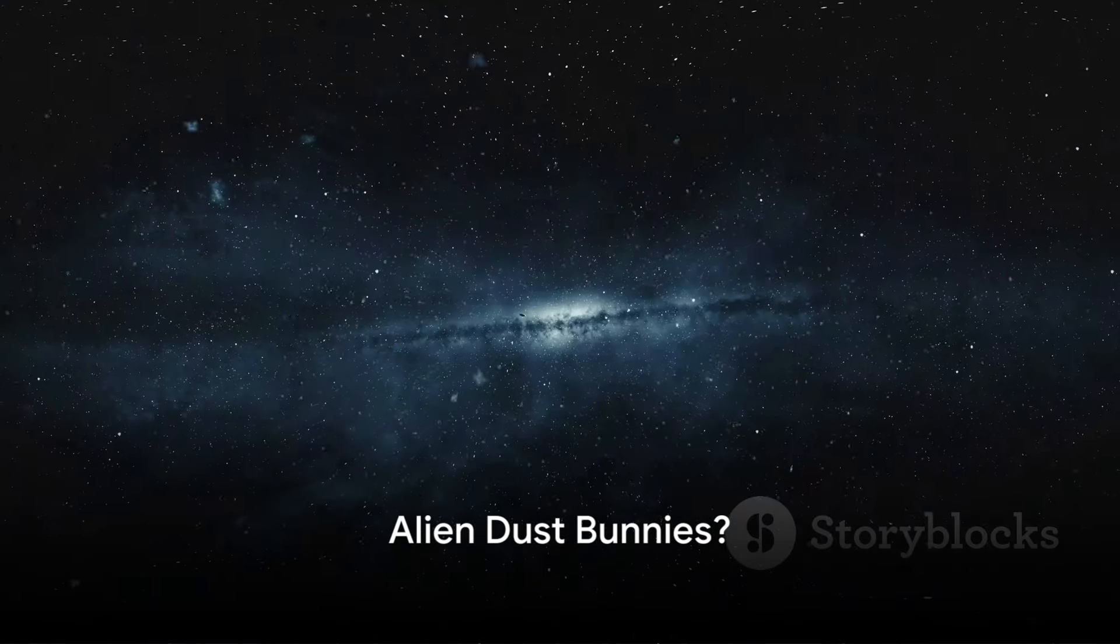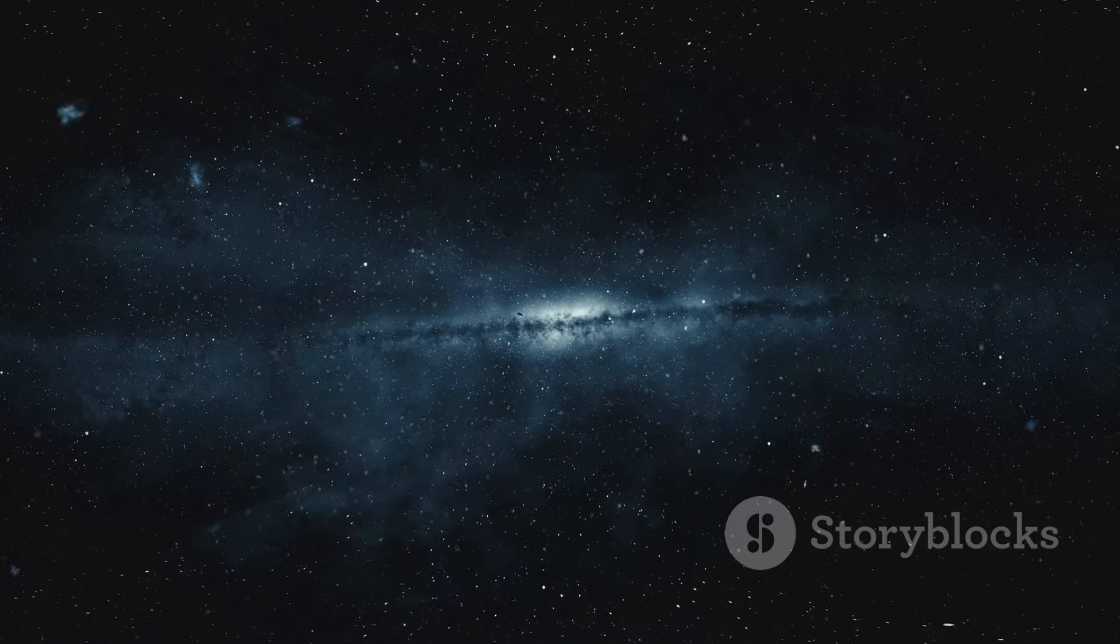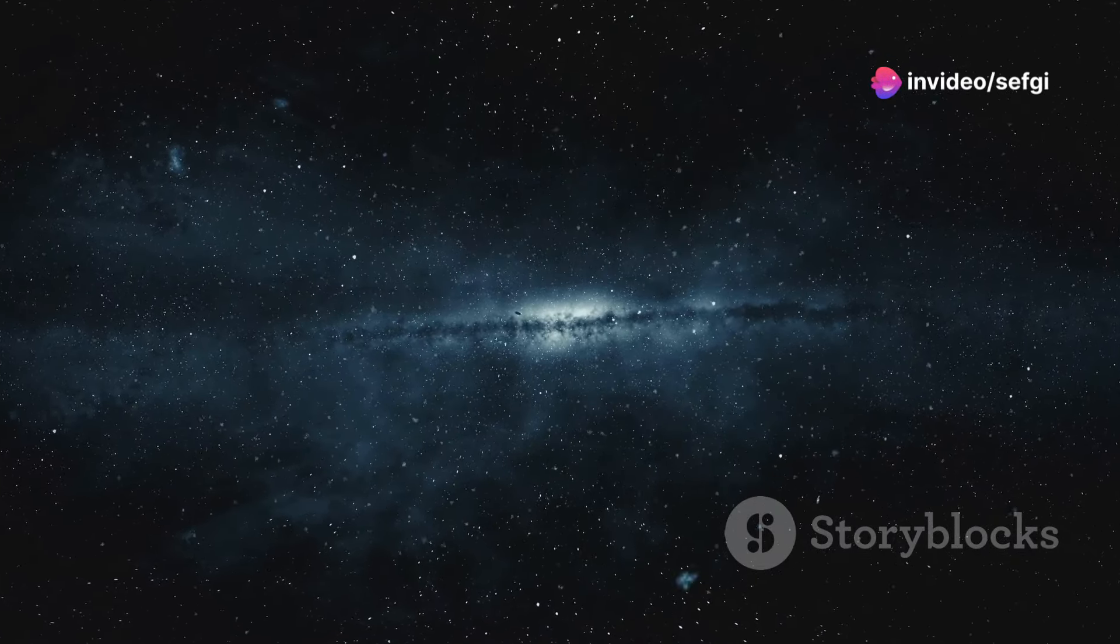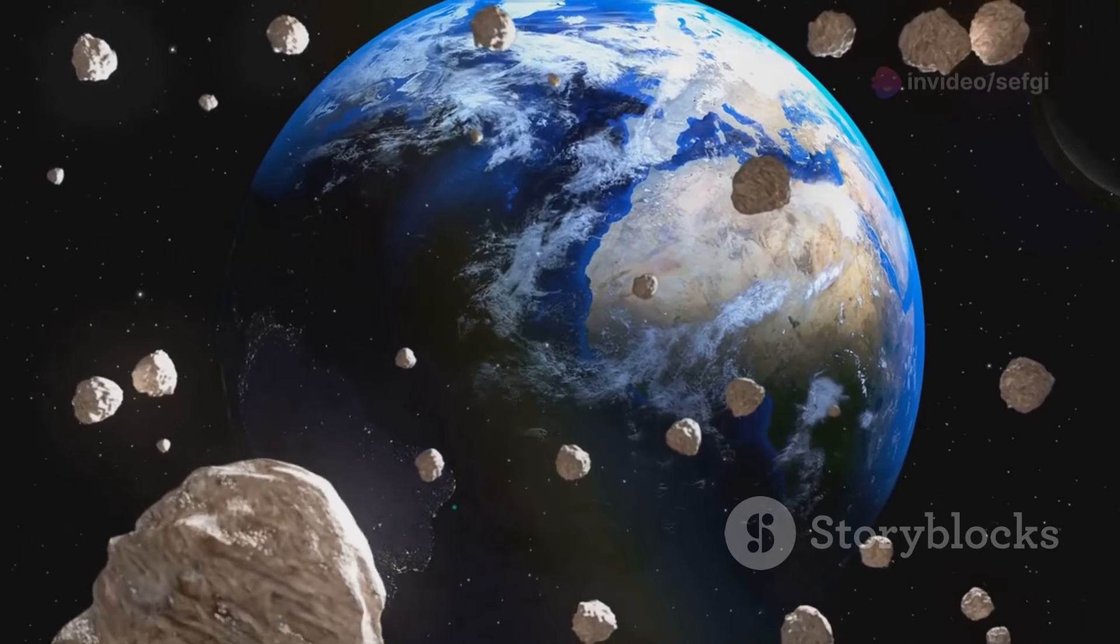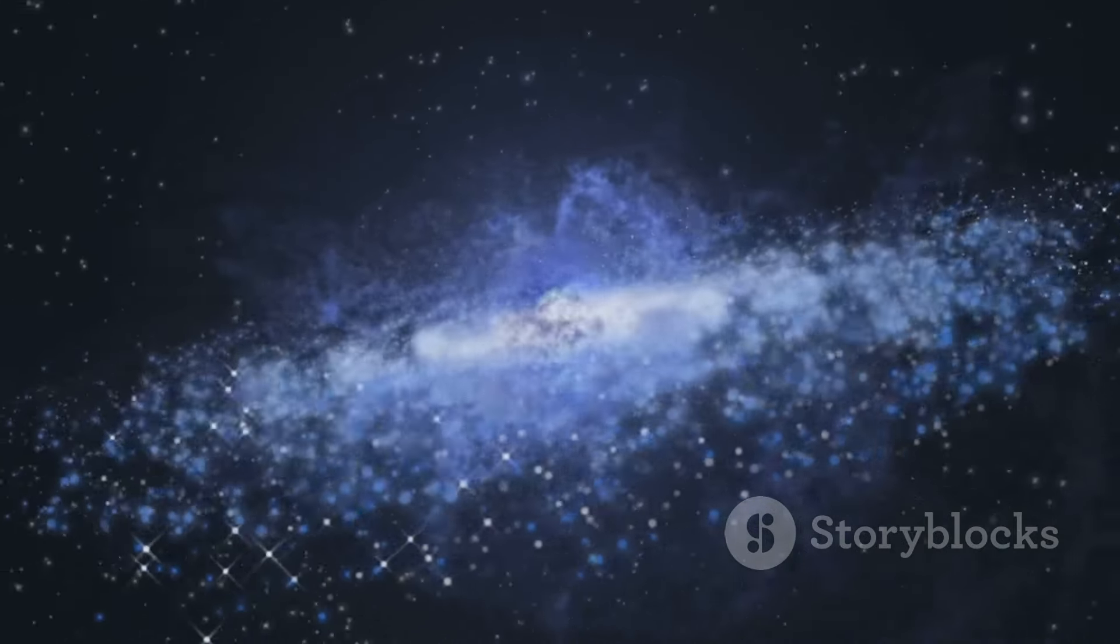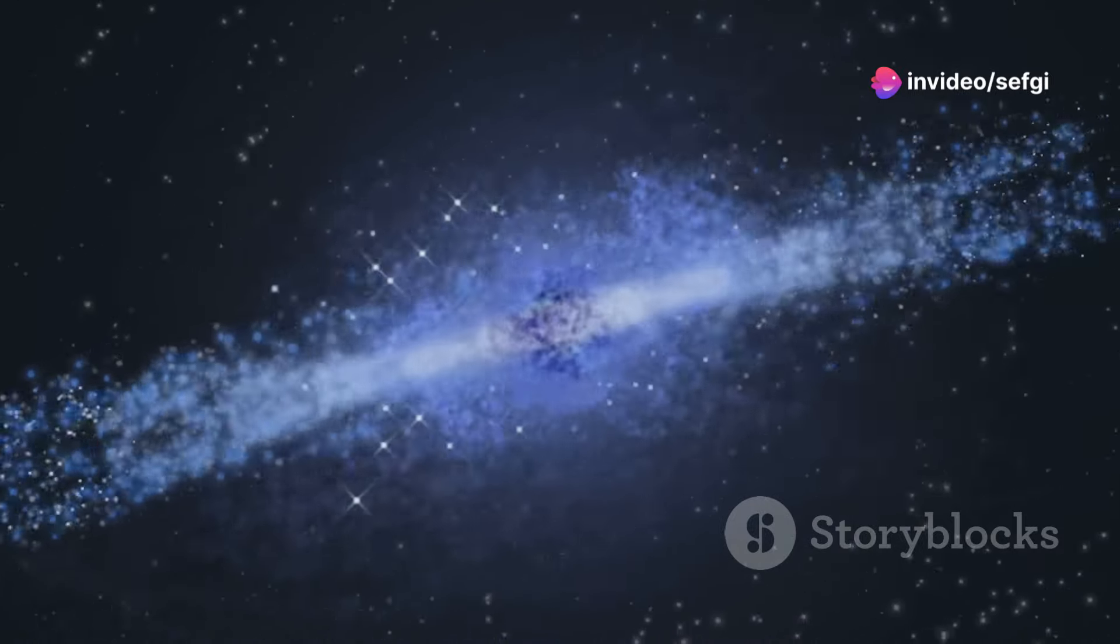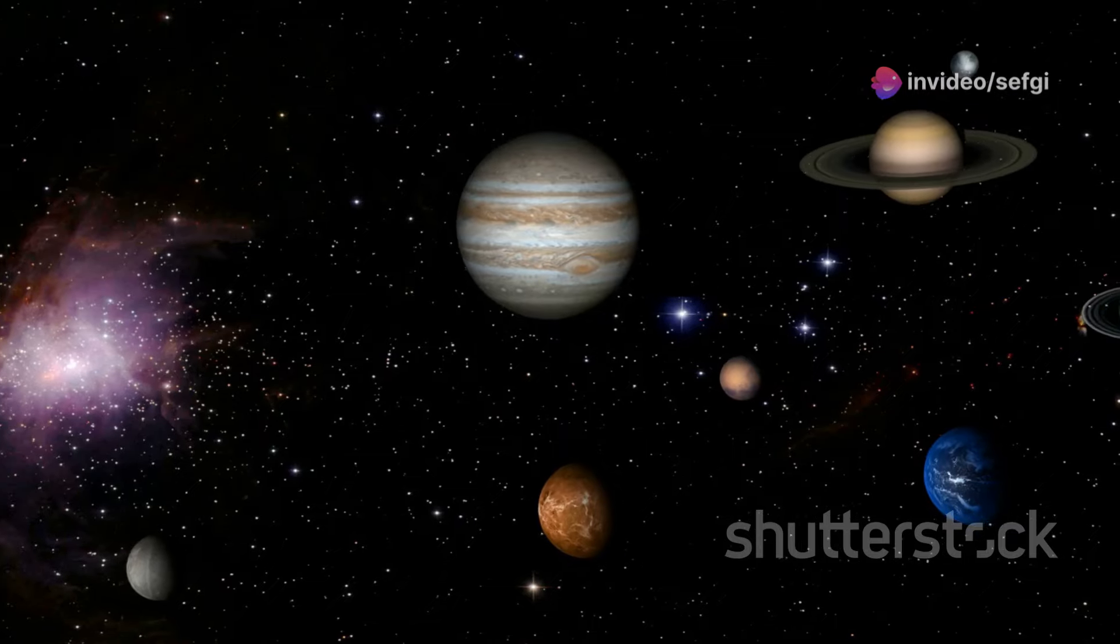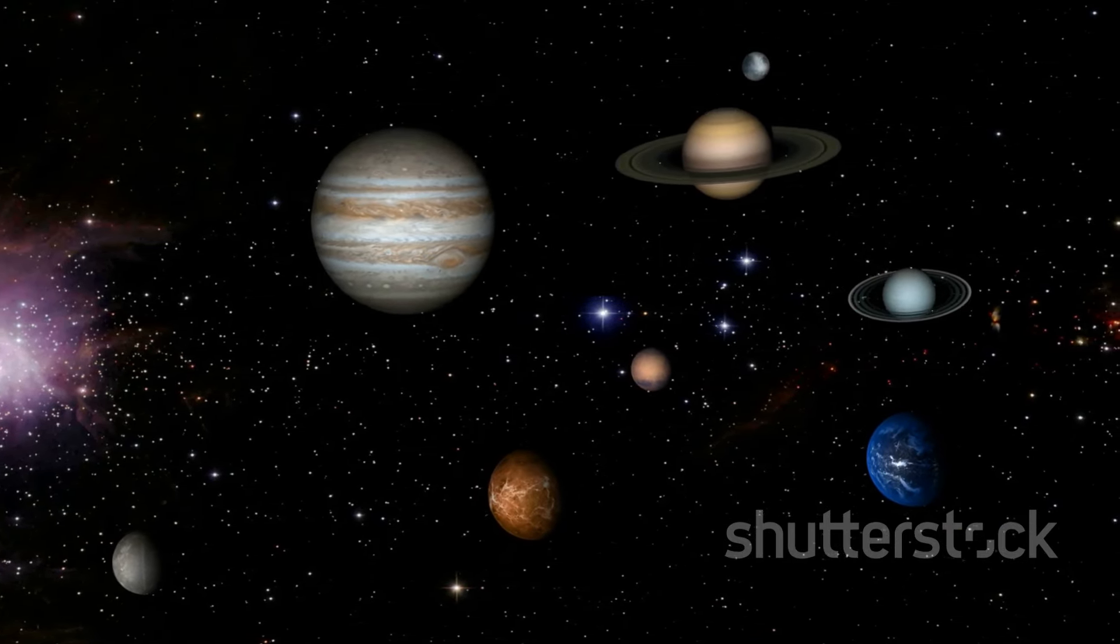Dust, it's everywhere, even raining down from space. Yes, you heard right. Among the countless particles that float around us, some have traveled light years across the cosmos to end up in your home. This isn't your everyday household dust though. It's cosmic dust, tiny fragments from comets and asteroids. These microscopic travelers are more than just interstellar dust bunnies. They carry within them the secrets of our universe. By studying these particles, scientists can unlock clues about the formation and evolution of our solar system, giving us a glimpse into the vast chronicle of cosmic time.